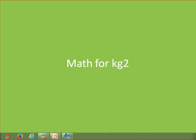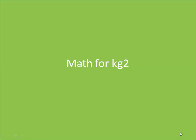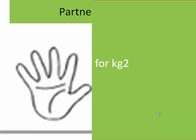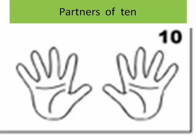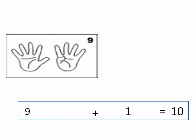Welcome everybody. Today in our math session we will revise the partners of 10 once again. Let's put our hands up — how many fingers do we have? One, two, three, four, five, six, seven, eight, nine, ten. So we have ten fingers in our hands. How many fingers can you see, Kijito, in this picture?